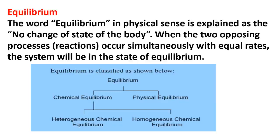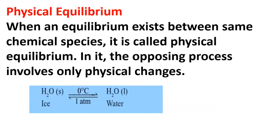Chemical equilibrium occurs in both homogeneous and heterogeneous conditions. The key idea is that equilibrium is a state when there is no change in the state of a body — when the two reactions occur simultaneously at equal rates, the system will be in a state of chemical equilibrium. When an equilibrium exists between the same species, it is called physical equilibrium, and the opposing process involves only one physical change.